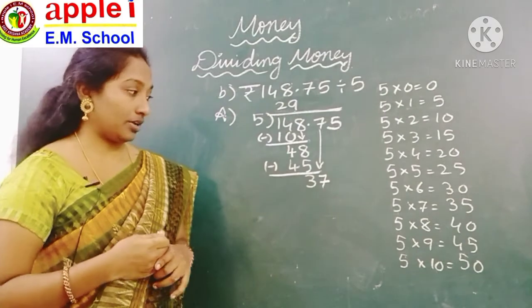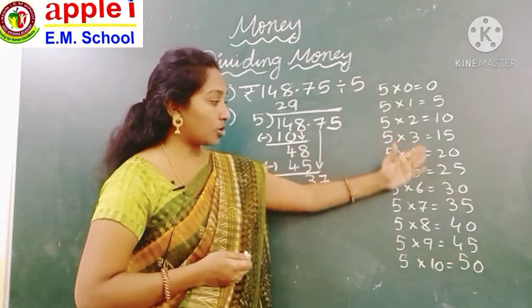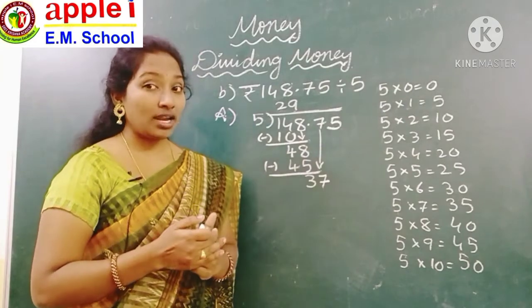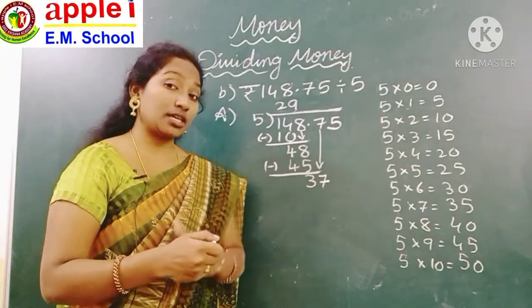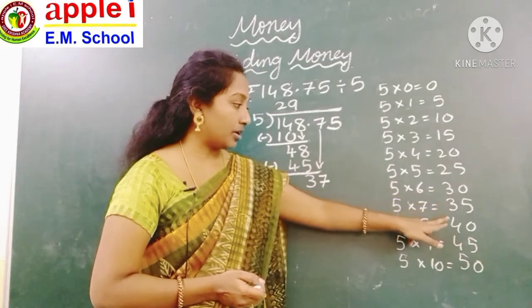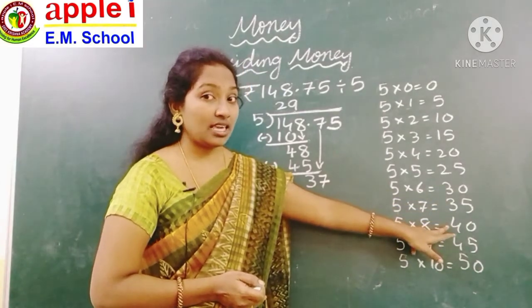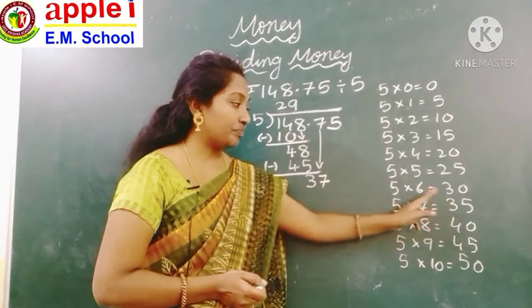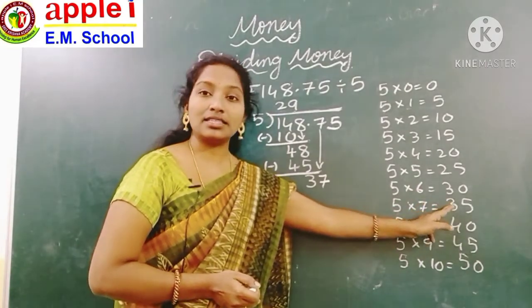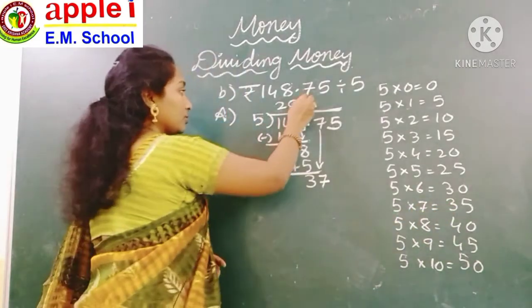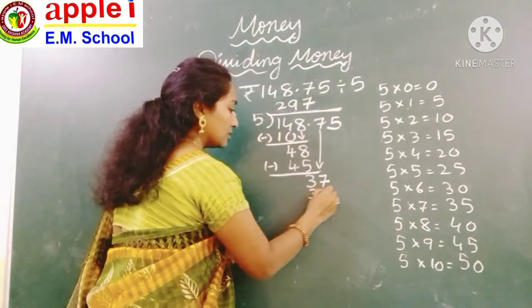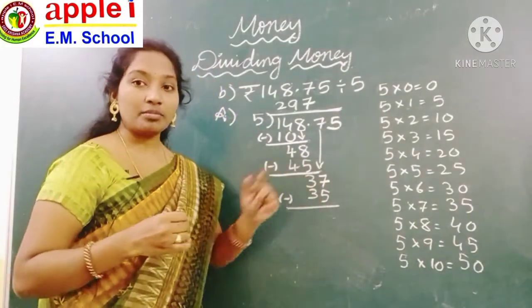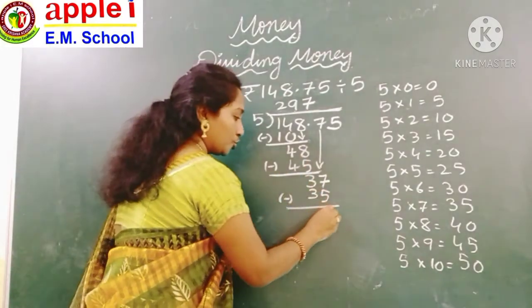Bring down the next digit: 7, making 37. Check whether 37 is in the 5 times table — no. Take the smallest nearest to 37: 30, 35, 40 — 40 is greater than 37, so take the one above: 5 sevens are 35. Do the subtraction: 37 minus 35 is 2.